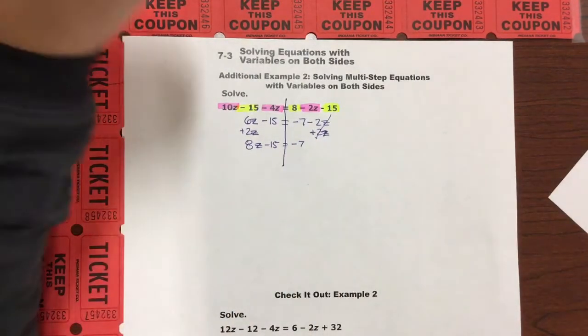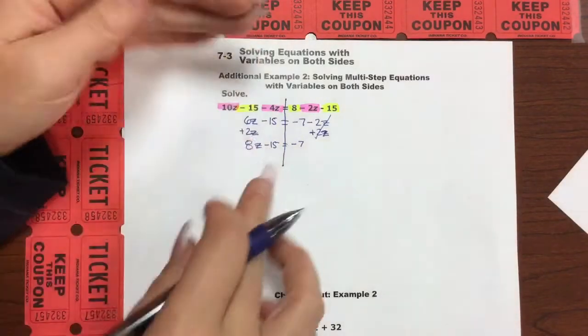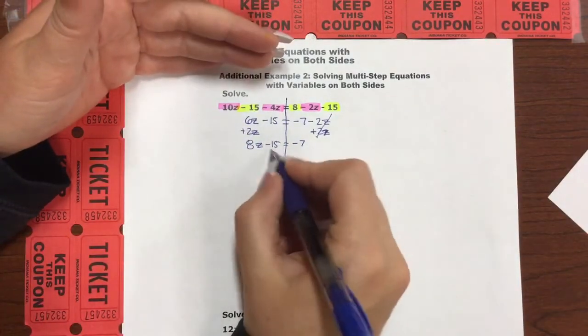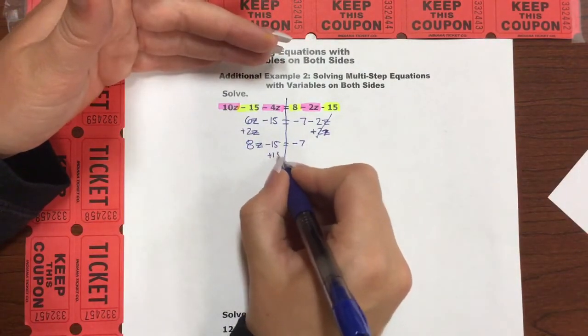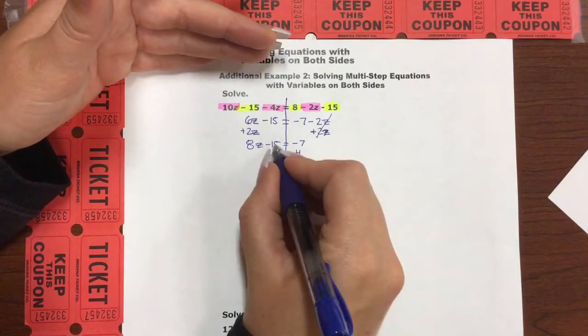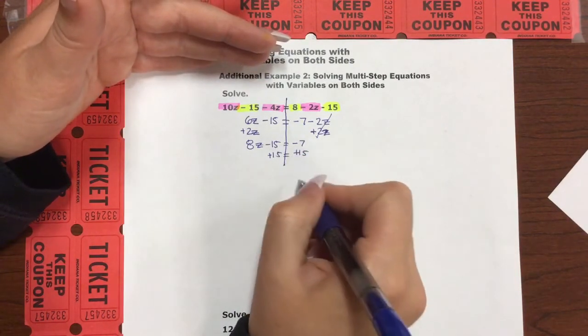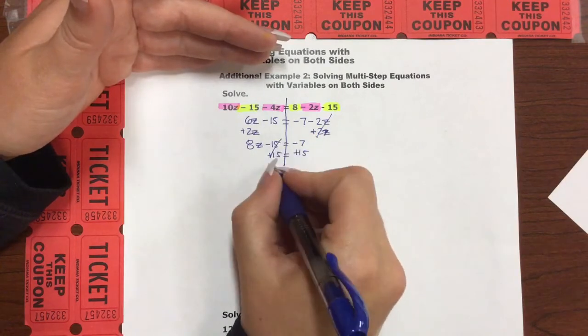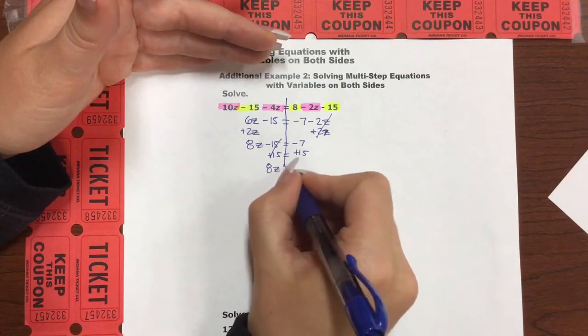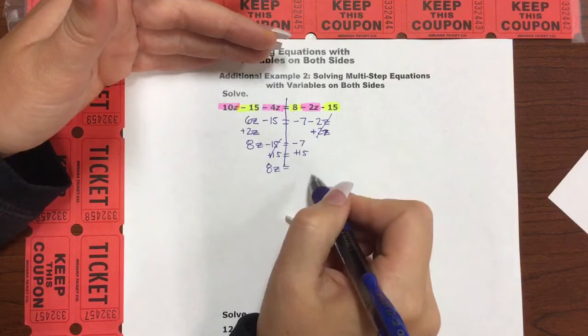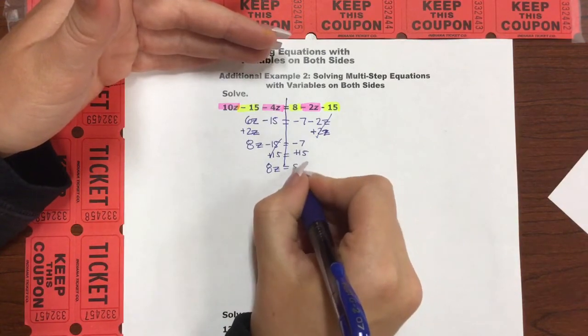So now it is time to isolate z, get it all by itself, and we have this two-step equation. So we're going to get rid of this 15 by doing the opposite, the inverse operation, which would be addition, because it's negative. And yes, that cancels. We're left with 8z equals negative 7 plus 15 would be a positive 8.